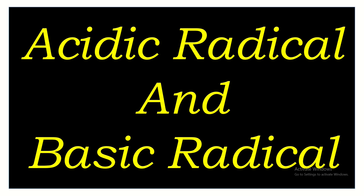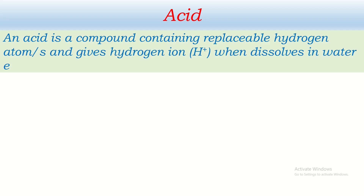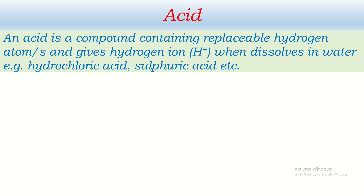Let's talk about acidic radical and basic radical, but before this we must have a clear idea about acid and base. An acid is a compound containing replaceable hydrogen atoms and gives hydrogen ion when dissolved in water. Common examples include hydrochloric acid and sulfuric acid. There are two major points in the definition: it contains replaceable hydrogen atoms, and when dissolved in water it gives hydrogen ion.